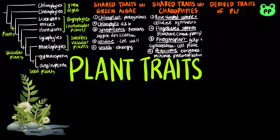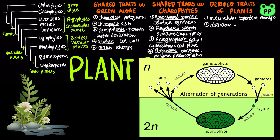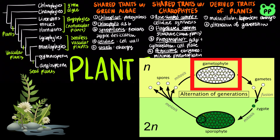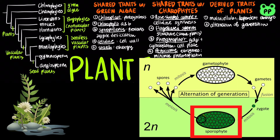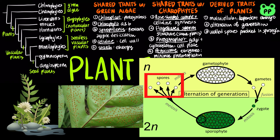All plants include five derived traits. First, a multicellular embryo that is dependent on the parent. Therefore, land plants are also called embryophytes. Second, alternation of generations, which means that a plant alternates between a multicellular haploid gametophyte and a multicellular diploid sporophyte. The sporophyte produces walled spores in organs called sporangia. The spore walls contain sporopollenin, making them resistant to harsh environments.